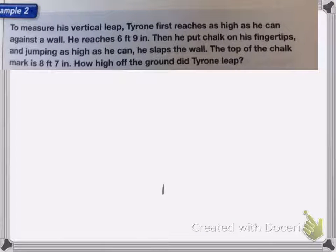Here I have to measure his vertical leap. Tyrone first reaches as high as he can against the wall. He reaches six feet, nine inches. Then he puts chalk on his fingertips and jumping as high as he can, he slaps the wall. The top of the chalk mark is eight feet, seven inches. How high off the ground did Tyrone leap?